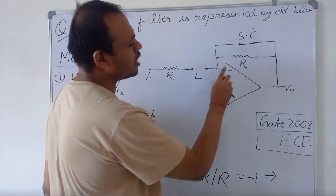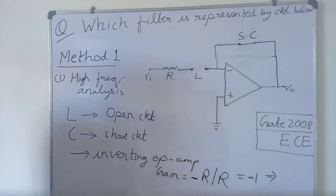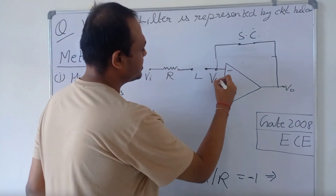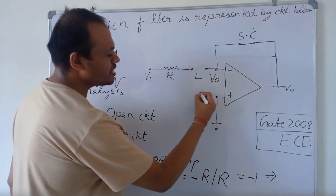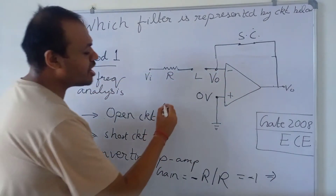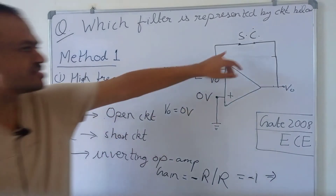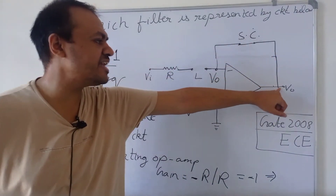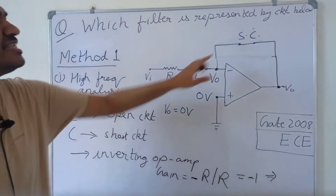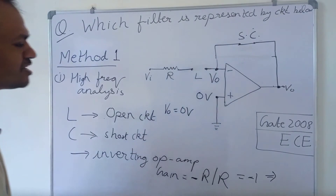Now the capacitor is a short circuit, so there is no need for this resistance R because it is in parallel with the short circuit — we can remove this resistance R. This voltage will be equal to V₀, and the other terminal is 0 volt because it is connected to ground. By the virtual ground concept, V₀ will be equal to 0 volt, because the capacitor is a short circuit.